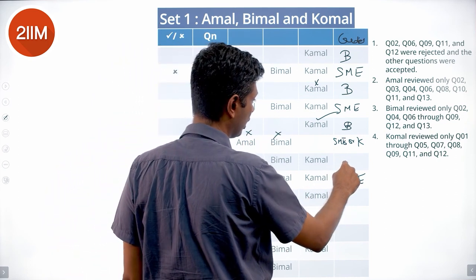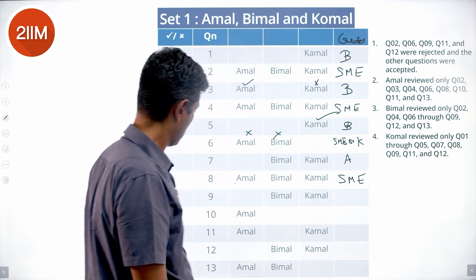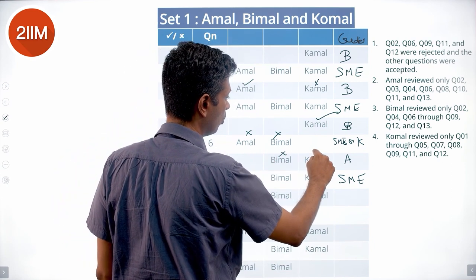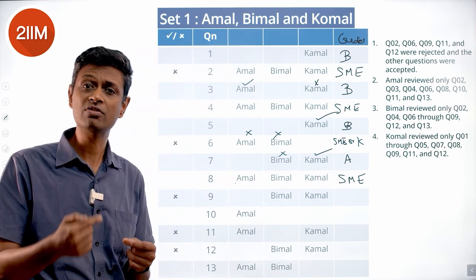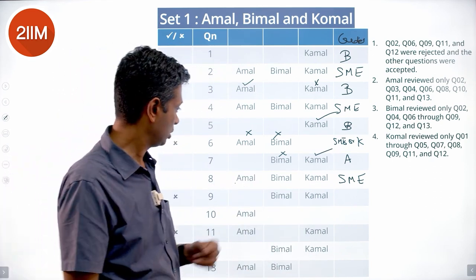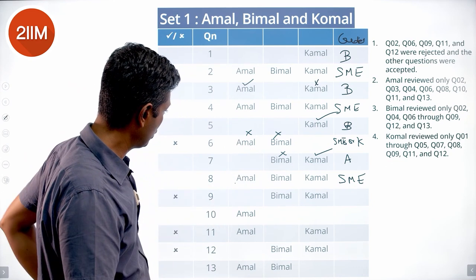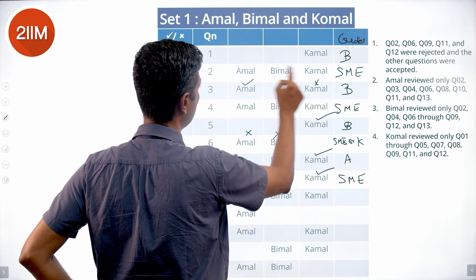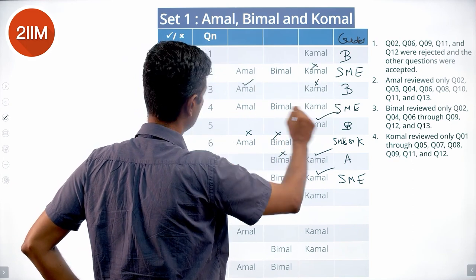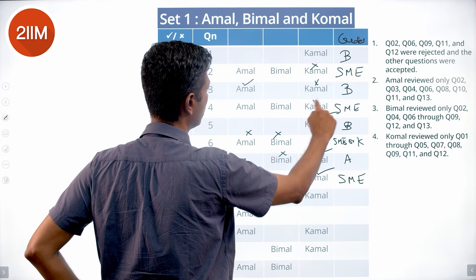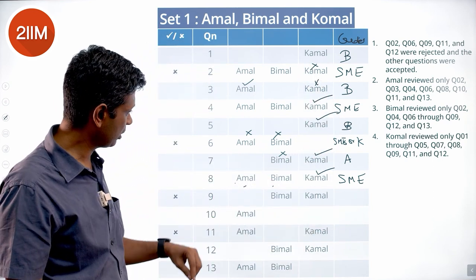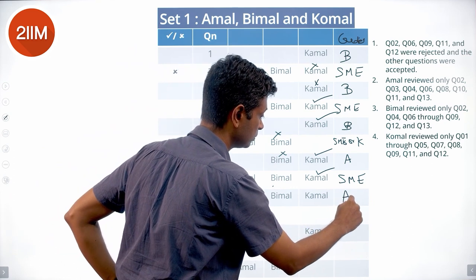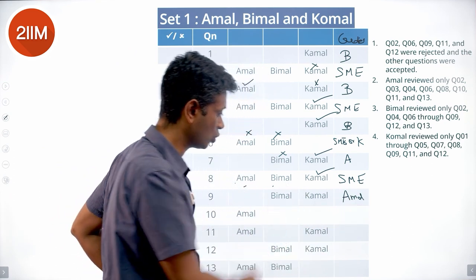For the question reviewed by Bimal and Komal, this must have been created by Amal. Bimal rejects it, so it goes to Komal, who accepts it — a question goes to Komal only after Bimal has rejected it.